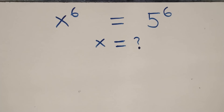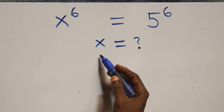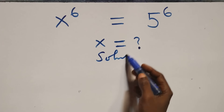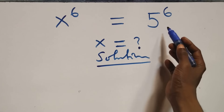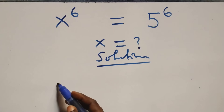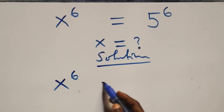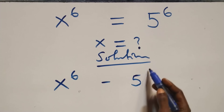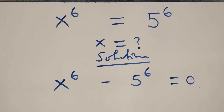We come to solve this exponential equation. What we have here, we take 5 raised to the power 6 to the left hand side and we have x raised to the power 6 minus 5 raised to the power 6 then equals to 0.